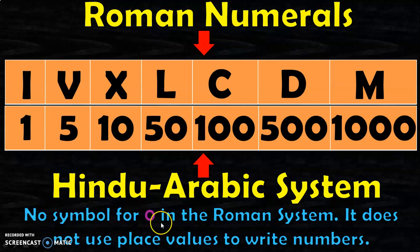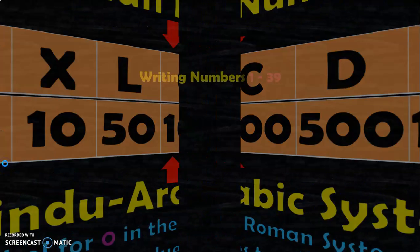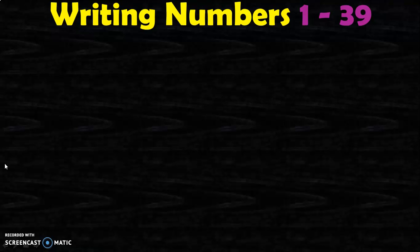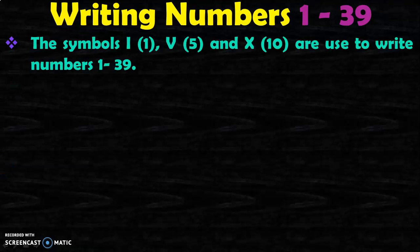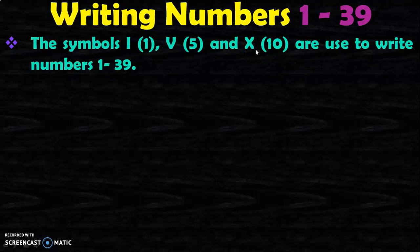You would have noticed there is no symbol for zero in the Roman system, and it does not use place value concepts to write numbers. They just have these seven numerals and there are a set of rules with which they add and subtract these numerals to form numbers. In class 4 we will be learning to write numbers from 1 to 39 in Roman numerals, making use of the symbols I, V, and X.